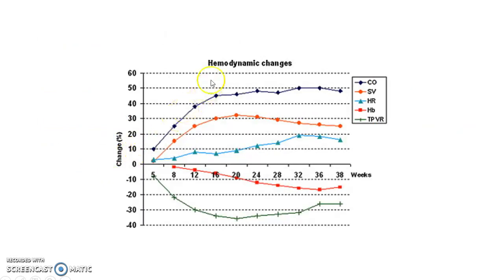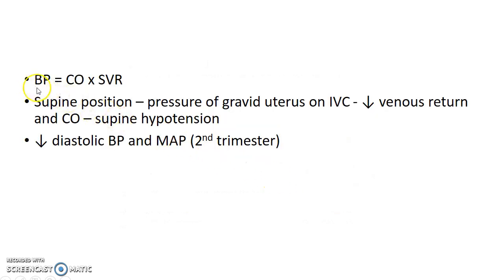This graph shows the hemodynamic changes in pregnancy. The x-axis shows the weeks of gestation and the y-axis shows the percentage change. As you can see, the heart rate increases and the stroke volume increases. As a result, the cardiac output increases — remember, cardiac output equals heart rate multiplied by stroke volume. Due to hemodilution, the hemoglobin level falls. As discussed, the total peripheral vascular resistance also falls.